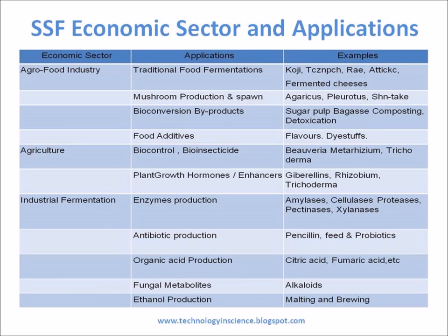Industrial Fermentation Applications: Enzyme production including amylases, cellulases, proteases, pectinases, and xylanases. Antibiotic production such as penicillin. Feed and probiotics. Organic acid production such as citric acid and fumaric acid. Fungal metabolites, alkaloids, ethanol production, malting and brewing.